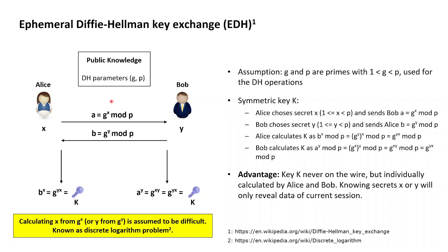Then Alice calculates G to the power of X modulo P and sends the result to Bob. Bob does the same with his private number Y, calculating G to the power of Y modulo P and sends the result to Alice. The values that Alice and Bob exchange in this manner are referred to as half-keys, and based on these half-keys both Alice and Bob can then calculate the symmetric key K completely in isolation.